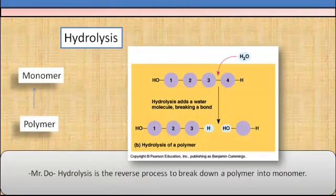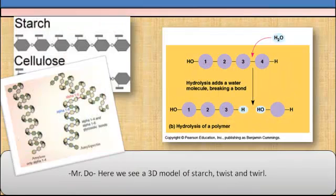Hydrolysis is the reverse process to break down a polymer into monomers. Here's a 3D model of starch, twists and a twirl.